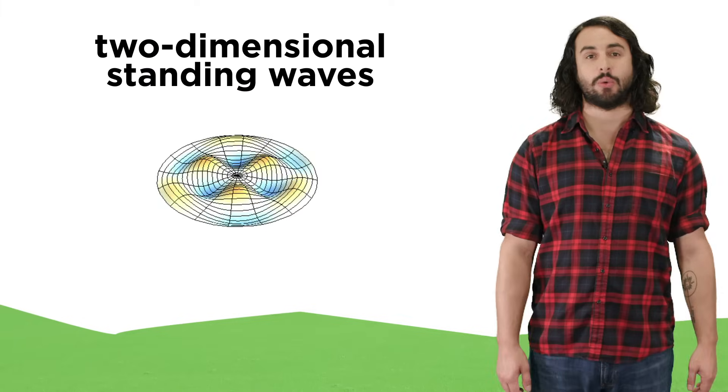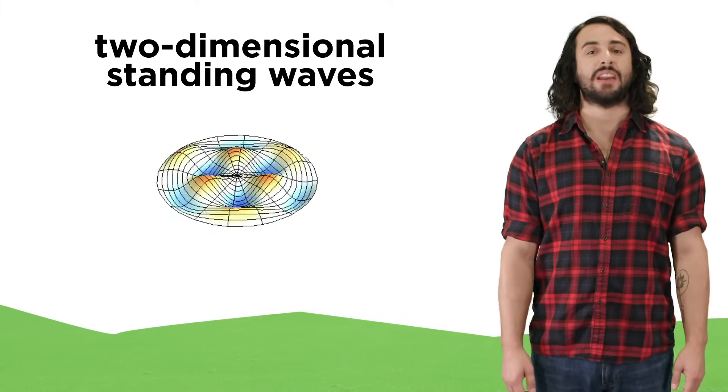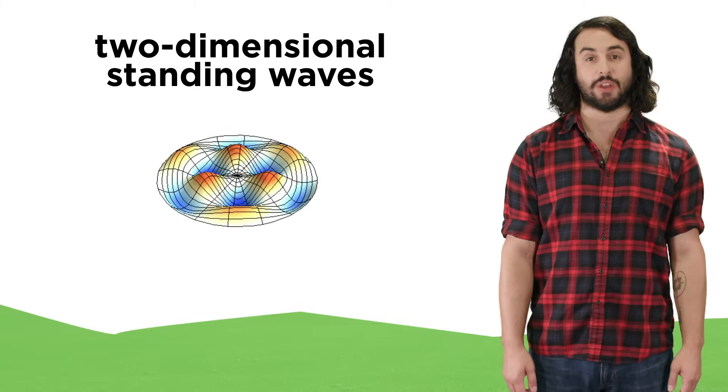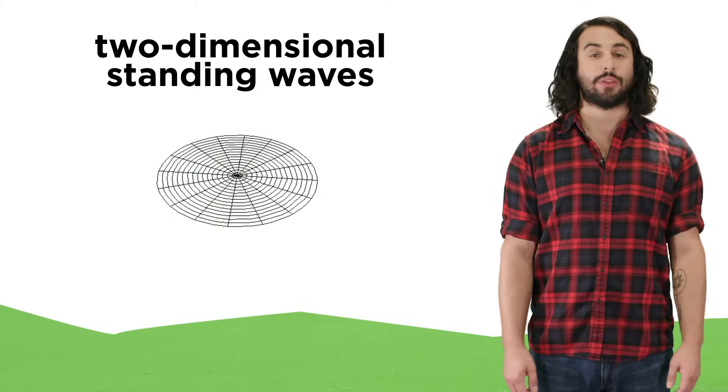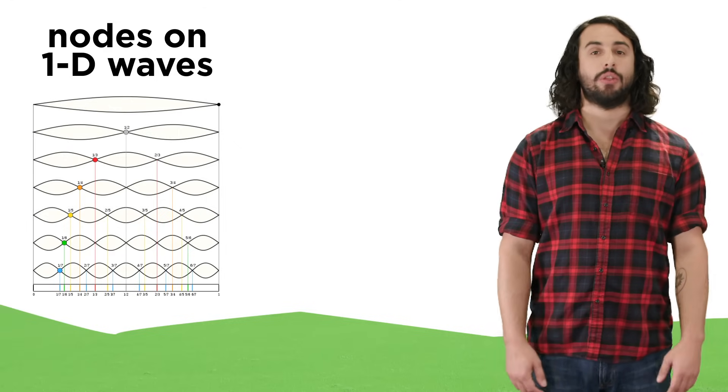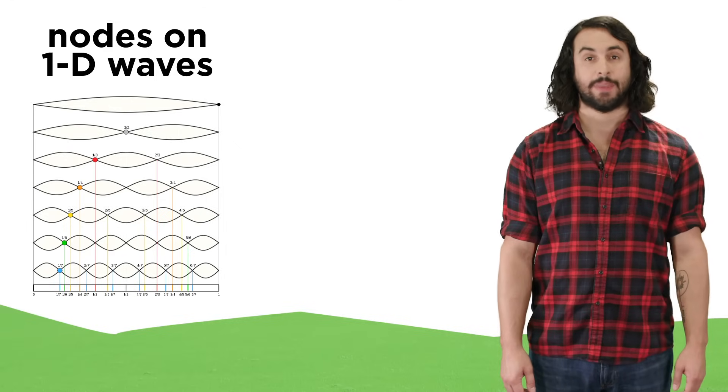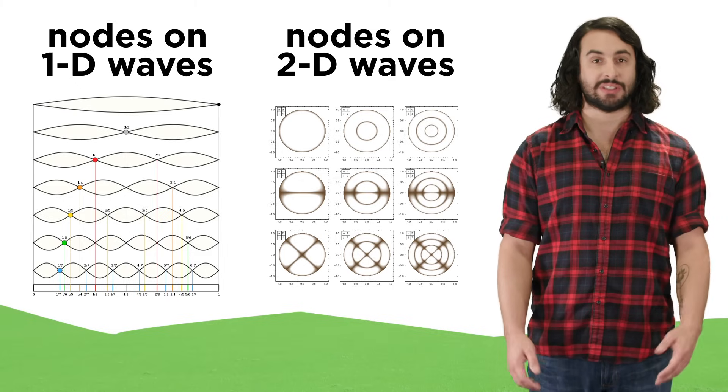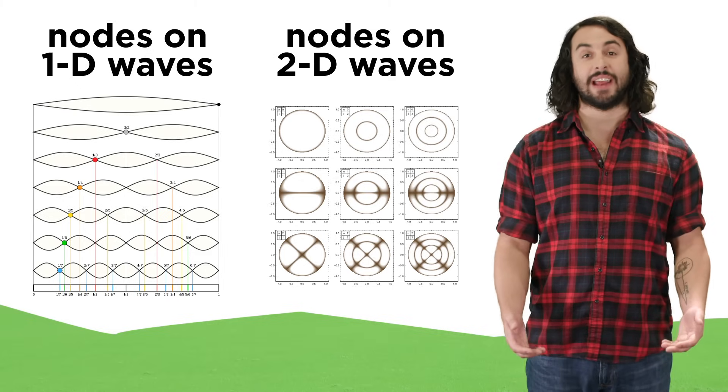Two-dimensional standing waves also exist, which manifest on a flat two-dimensional surface, like a drum head, rather than a one-dimensional string. On a one-dimensional string, the nodes are points, but on a two-dimensional surface, the nodes are lines and curves.